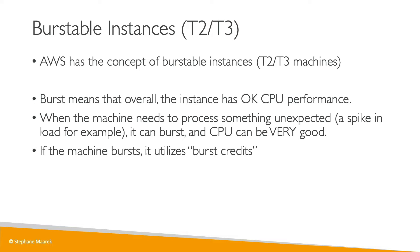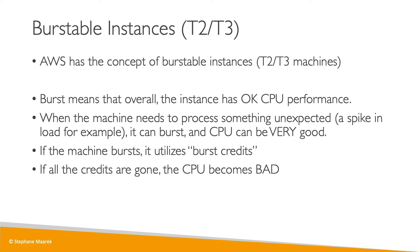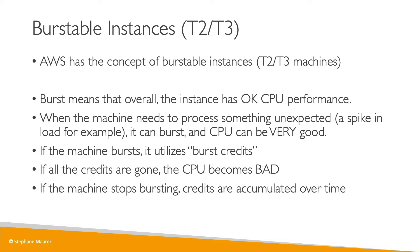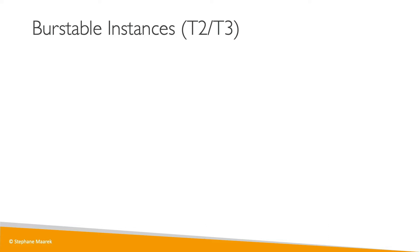When the machine bursts, it uses what's called a burst credit. As your EC2 instance has its lifecycle, it will accumulate burst credits. When the CPU is intensely being used, burst credits are consumed as well. If all credits are gone, the CPU becomes really, really bad, which means you're not using the right type of instance. If the machine stops bursting, CPU credits are regained over time and you can reuse them whenever you need them.